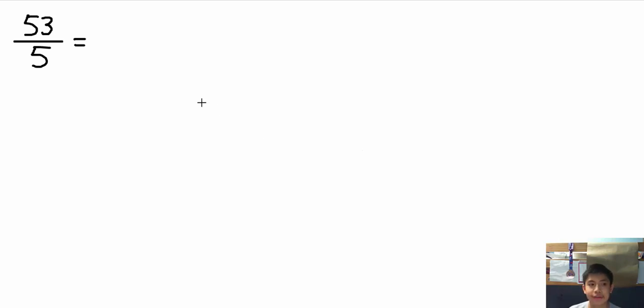So here we have 53 over 5 as an improper fraction. As a decimal, it would equal 10.6. Now, as always, we will round up, so if the question asks us to round up, it would be 11.